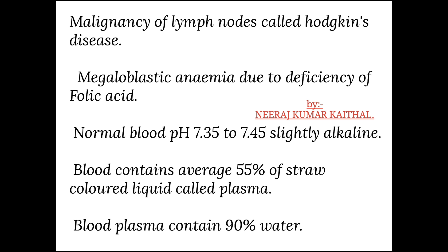Malignancy of lymph nodes is called Hodgkin's disease. Megaloblastic anemia is due to deficiency of folic acid. Normal blood pH is 7.35 to 7.45, which is slightly alkaline.